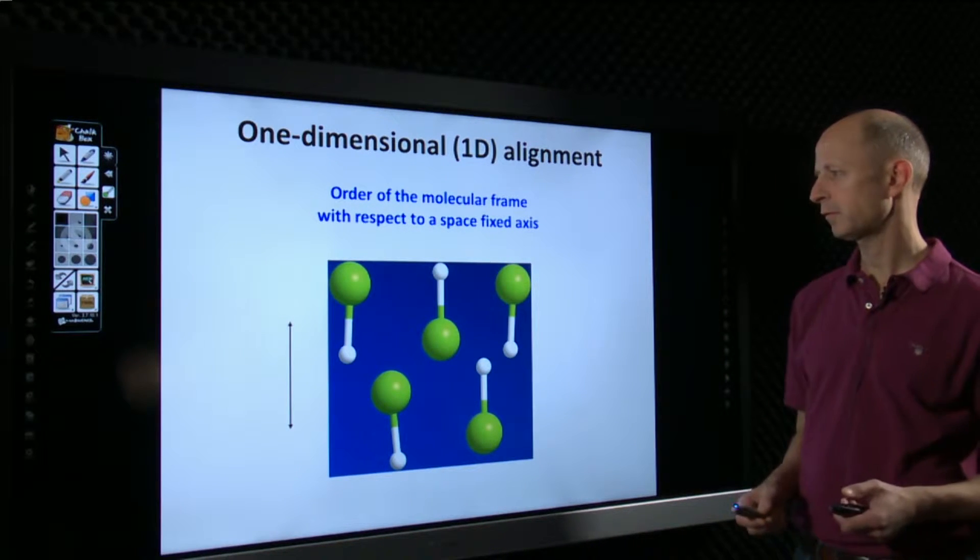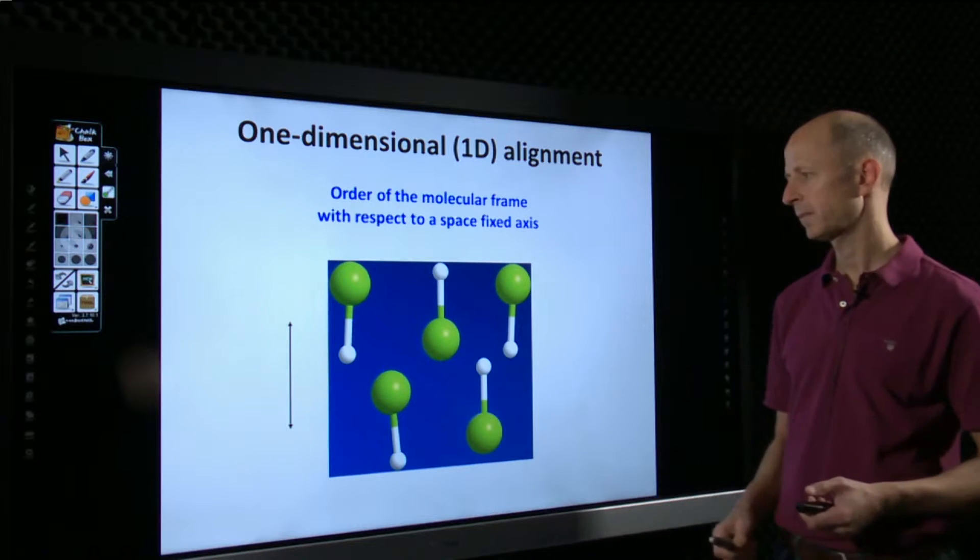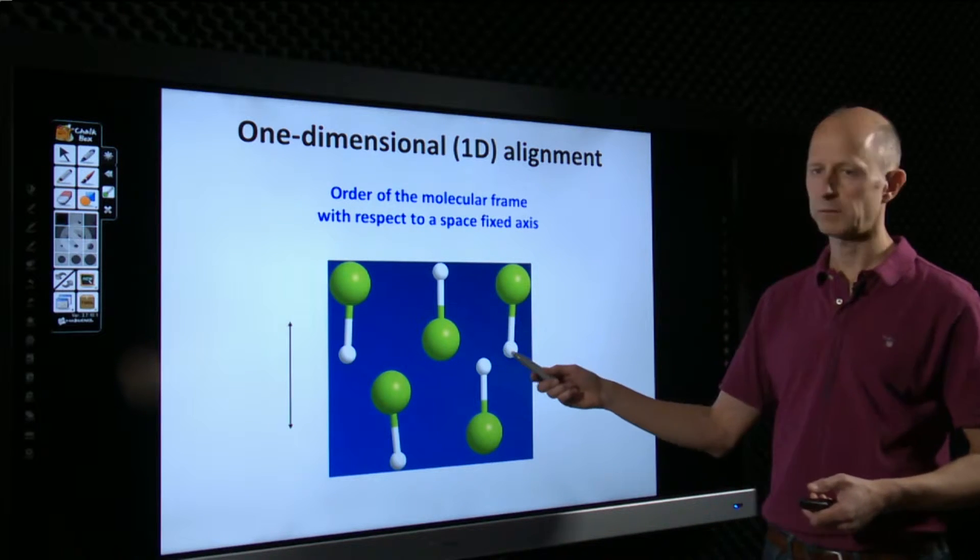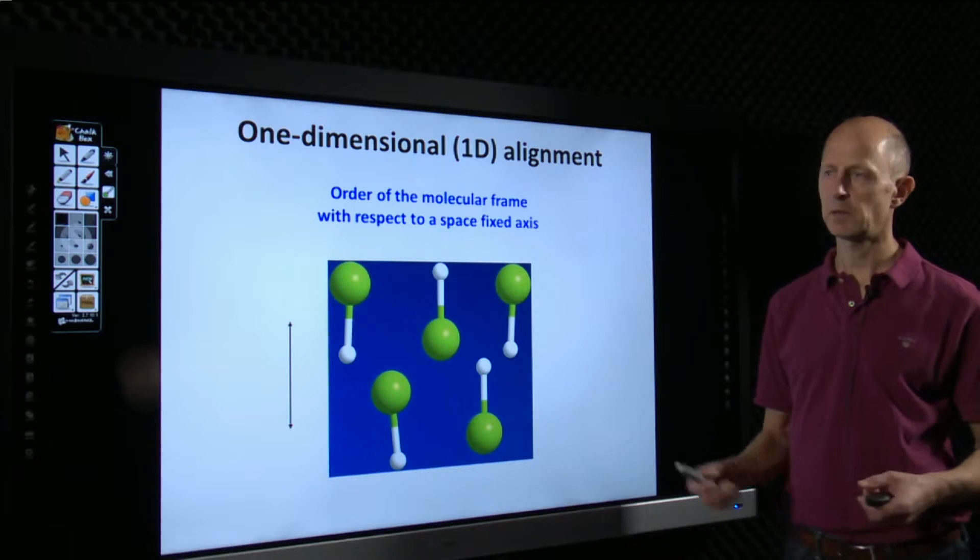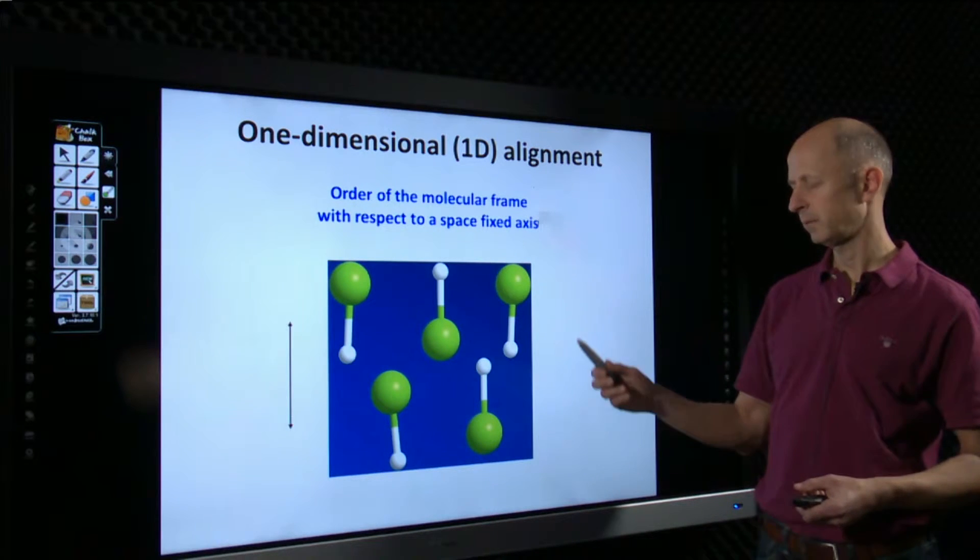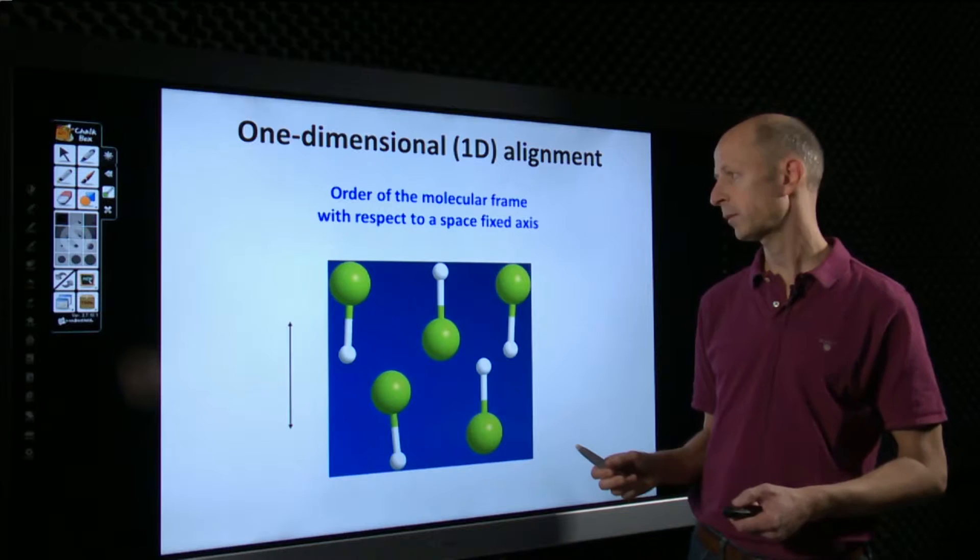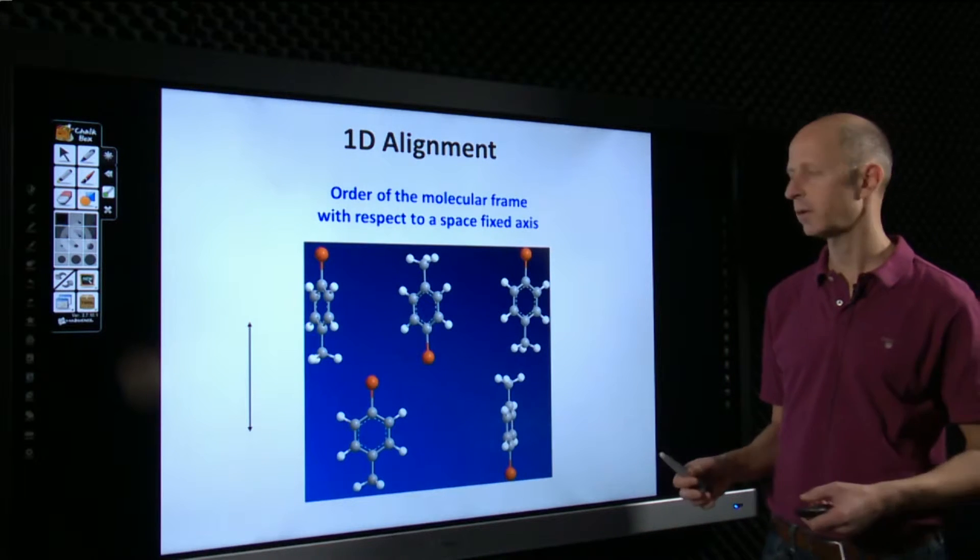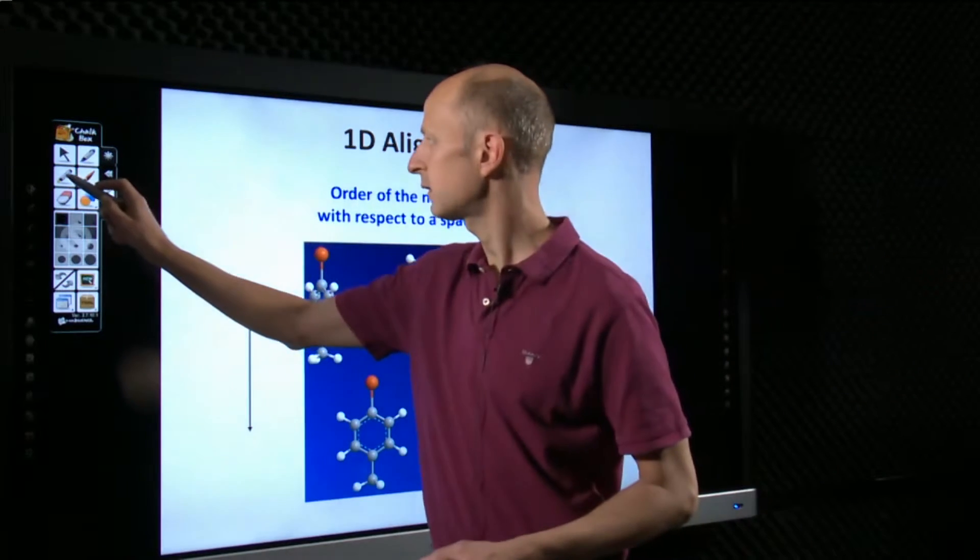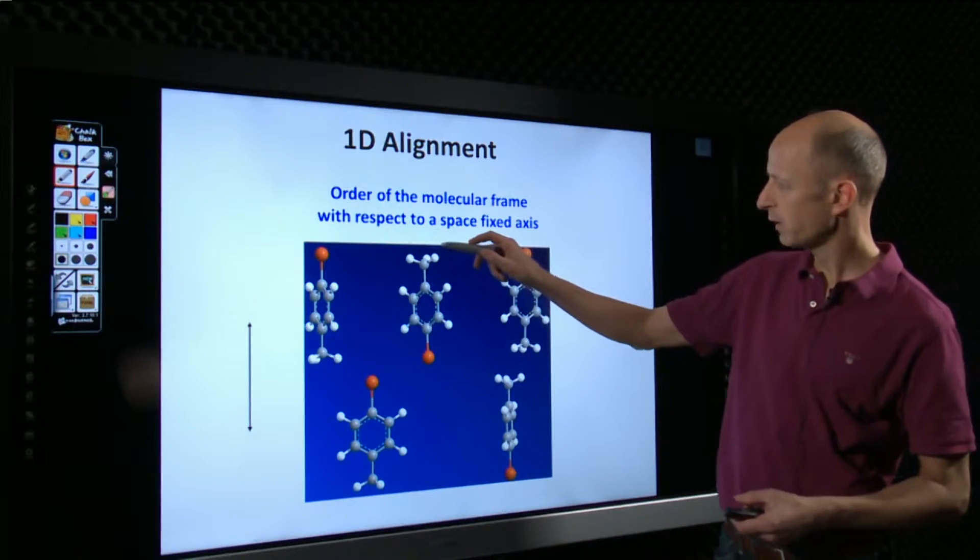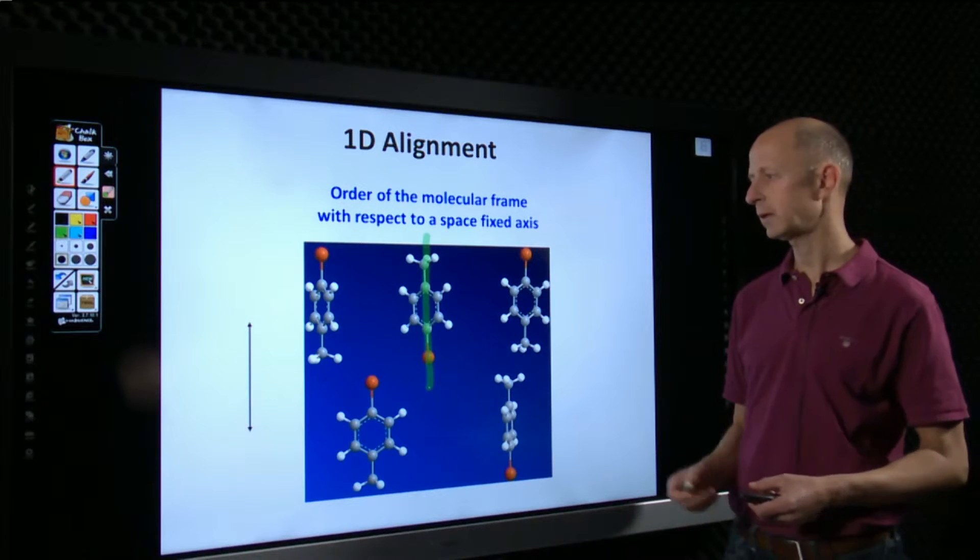Alignment of molecules refers to ordering molecular axes to axes that are fixed in the laboratory frame. If you order a single axis, as is illustrated in this view graph here, of a molecule to an axis that is confined in space, then we call it one-dimensional alignment. This concept is illustrated for a simple linear or even a simple diatomic molecule here, but it actually also applies to polyatomic molecules. In this case, the axis that is becoming aligned is the most polarizable axis. This axis of the molecule is aligned, and again, it's 1D alignment.